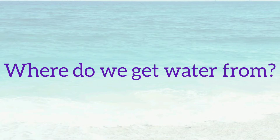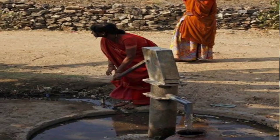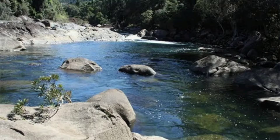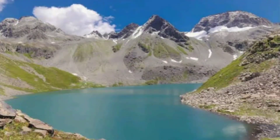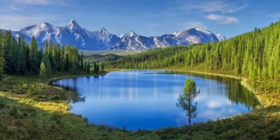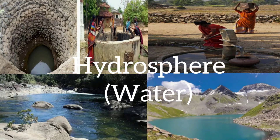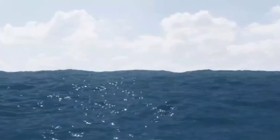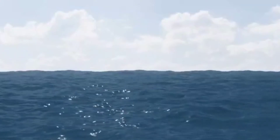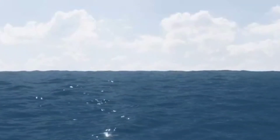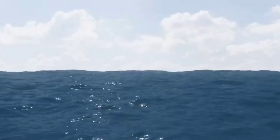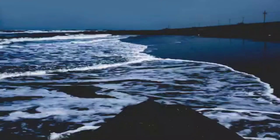Where do we get water from? We get water from wells, rivers, dams, lakes, etc. All these water bodies are part of the hydrosphere. Most of this water is in the ocean, and we know that ocean water is salty.